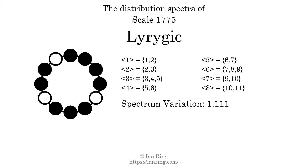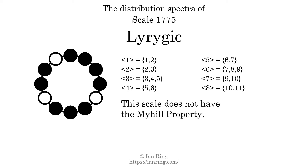The spectrum variation is the sum of all the widths divided by the number of tones. The spectrum variation of this scale is 1.111. Since the variation is greater than 0, this indicates that the scale is not perfectly even. The highest spectrum width is 2. Since this is greater than 1, we know that this scale is not maximally even. If every spectrum has exactly 2 specific intervals, we call that the Myhill property. This scale does not have the Myhill property. Since the generic interval ranges do not overlap, this scale is proper. But it is not strictly proper because some specific intervals appear in more than one spectrum.